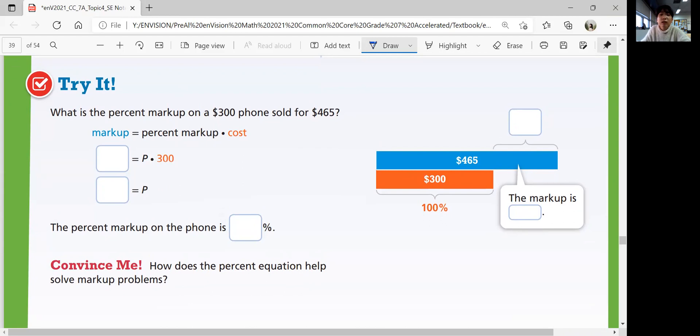What's the percent markup on a $300 phone sold for $465? You buy a phone for $300 and then you sell it for $465. Your whole price is $300, that's your original price. You sell it for $465, the markup is the difference, which is $165. Markup $165 equals P times $300, the cost. Divide $165 by $300 to get P, you get 0.55. The percentage of the phone is 55%.